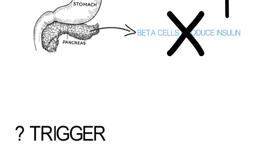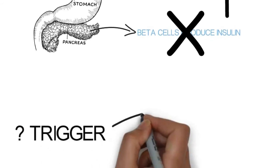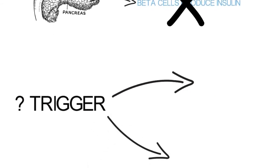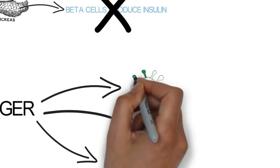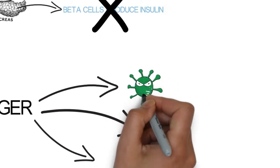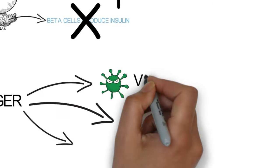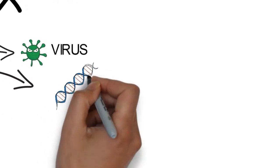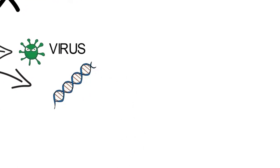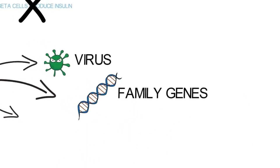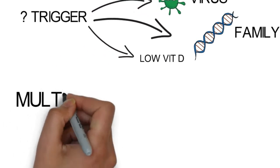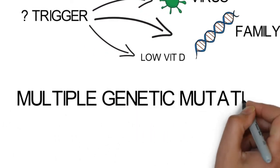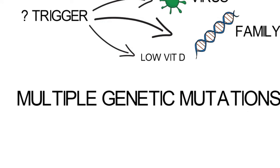What triggers this destruction is not clearly known, but it is postulated that certain viral illnesses in childhood, those with a family history of type 1 diabetes, or those with lower vitamin D levels are at a higher risk of developing type 1 diabetes. There are mutations in several genes and not just a single genetic mutation that is responsible.